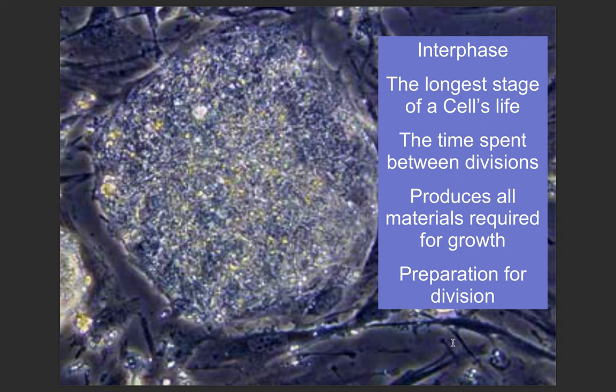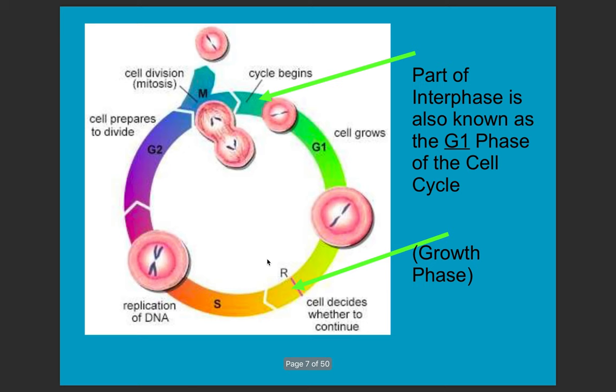Interphase — approximately 90% of the time the cell spends here. This is just the time when it's living and functioning as a normal cell. As you can see, there are not any really dark lines. The chromosomes during interphase are spread out throughout the cell. But during interphase, those chromosomes are replicated and other proteins are made in order for cell division to be ready to go.